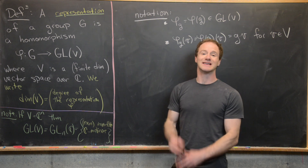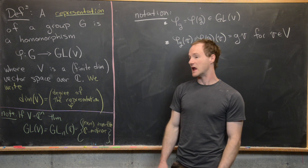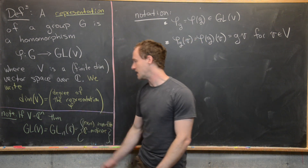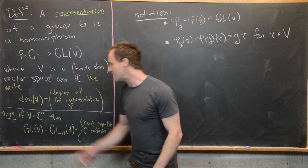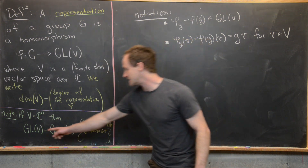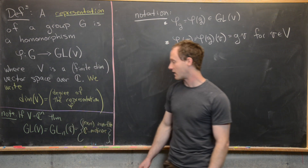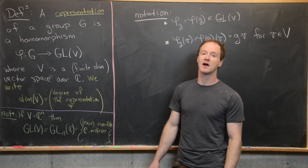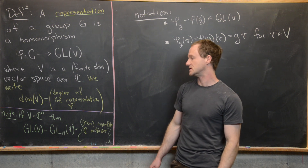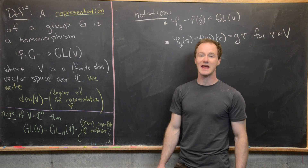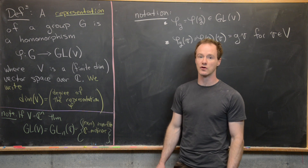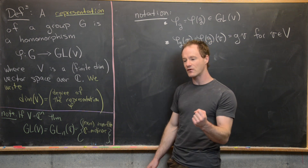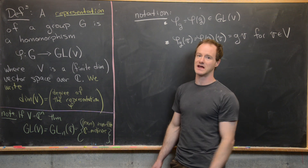The standard way to think about n-dimensional vectors is as column vectors, i.e., C^n. If V is C^n, then GL(V) is GL_n(C) — the group of invertible n-by-n complex matrices. So a degree-n representation assigns every group element to an n-by-n matrix.